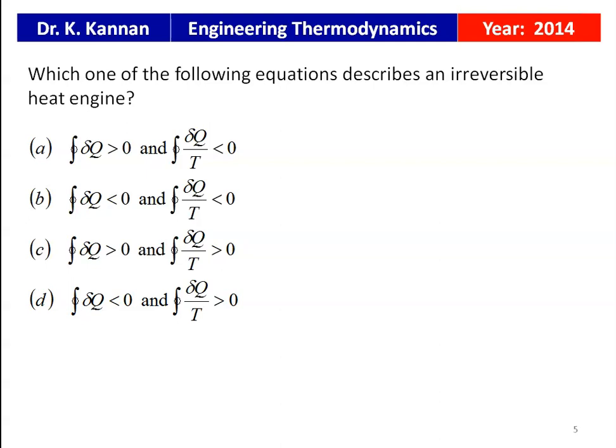This is from the 2014 question paper: which one of the following equations describes an irreversible heat engine? Option A: cyclic integral of δQ > 0 and cyclic integral of δQ/T < 0. Option B: cyclic integral of δQ/T < 0 and cyclic integral of δQ/T > 0. Option C: cyclic integral of δQ > 0 and cyclic integral of δQ/T > 0. Option D: cyclic integral of δQ < 0 and cyclic integral of δQ/T > 0.